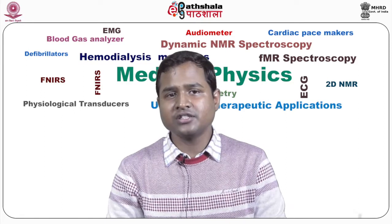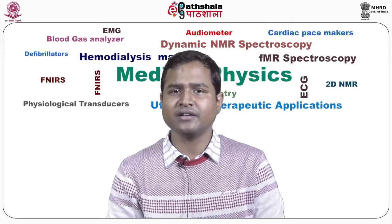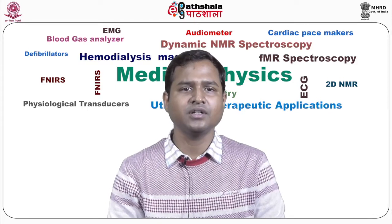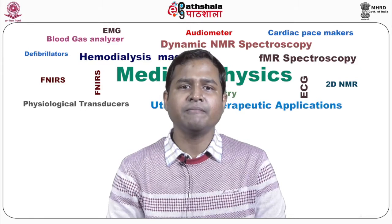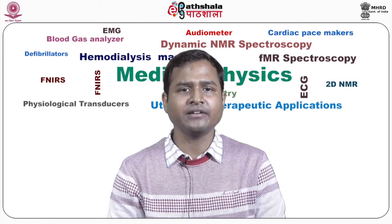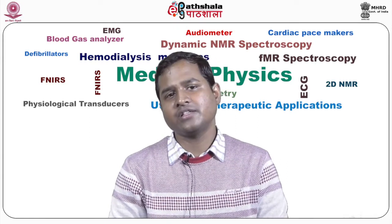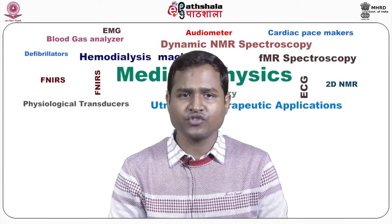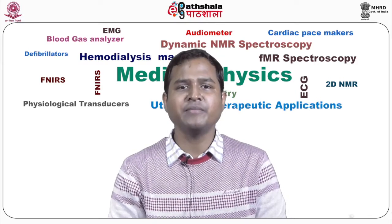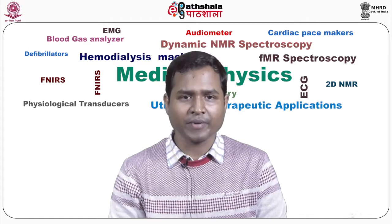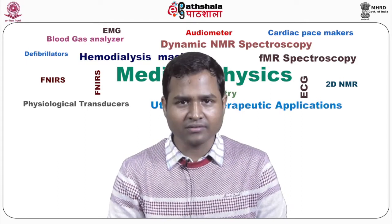Next, dislocation of the ossicular chain — mainly mechanical dislocation. Next, cholesteatoma, which is an abnormal benign growth in the middle ear due to repeated middle ear infection. Next, otitis media with effusion: viral and bacterial infection in the middle ear with pus formation.